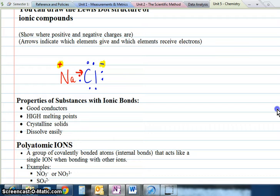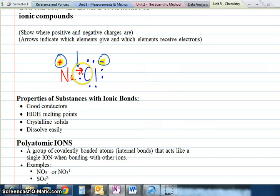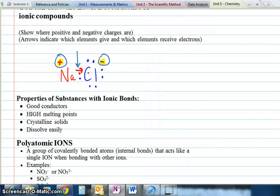When you identify a Lewis dot structure, you'll see the positive and negative charges. You'll see an arrow indicating that sodium gave an electron to chlorine. Sodium becomes positive, chlorine becomes negative, and they stick together like magnets.